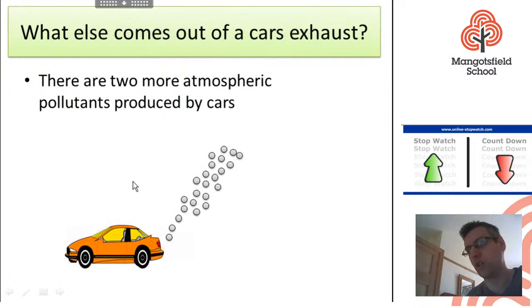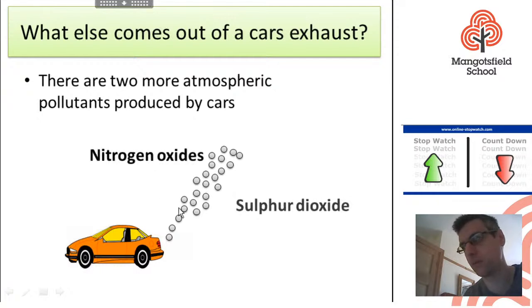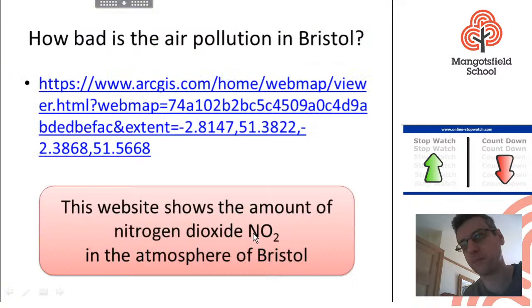So there are two more atmospheric pollutants caused by burning petrol and diesel in cars: nitrogen oxides and sulfur dioxide. We're going to look at how these are formed and what problems they cause.